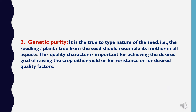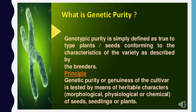The second seed quality is genetic purity. It is the true-to-type nature of the seed — the seedling, plant, or tree from the seed should resemble its mother in all aspects. This quality character is important for achieving the desired goal of raising the crop, whether for yield, resistance, or desired quality factors. Genotypic purity is simply defined as true-to-type plants or seeds conforming to the characteristics of the variety as described by the breeders. Genetic purity or genuineness of the cultivar is tested by means of heritable characteristics, which includes morphological, physiological, or chemical properties of seed, seedlings, or plant.